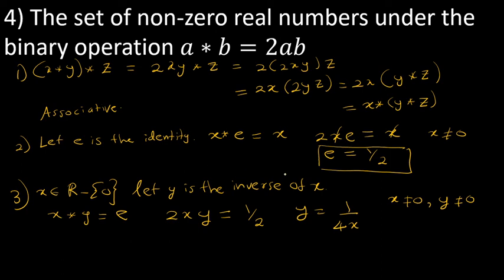I think this example is also clear. From this example we identified that the identity is one-half, the inverse of any element x is 1 over 4x, and the binary operation is associative. So the set of non-zero real numbers under x star y equals 2xy is a group.